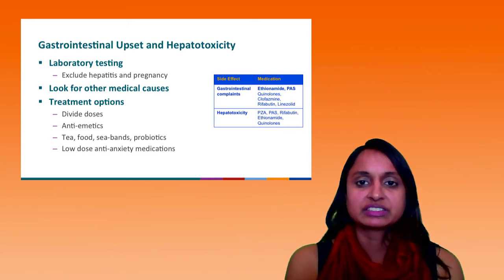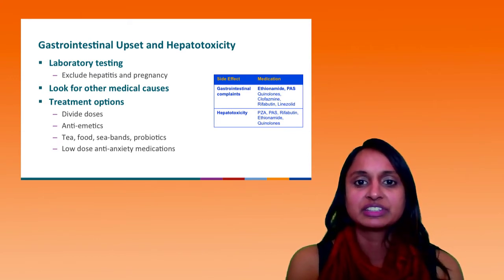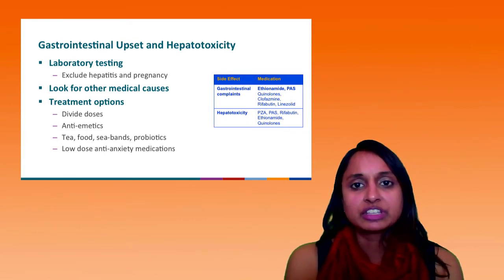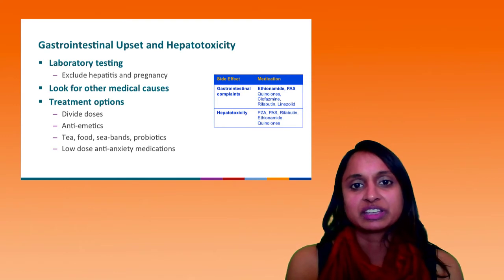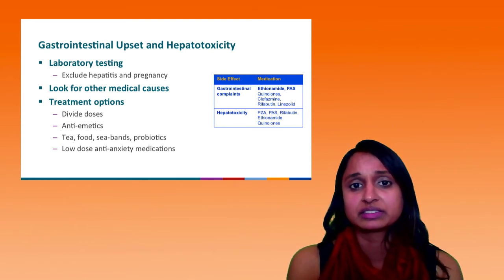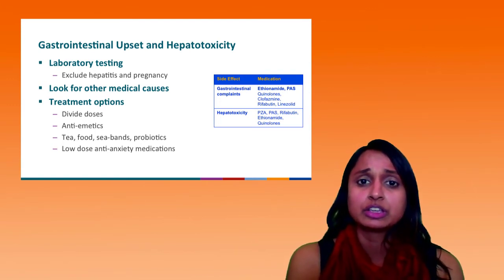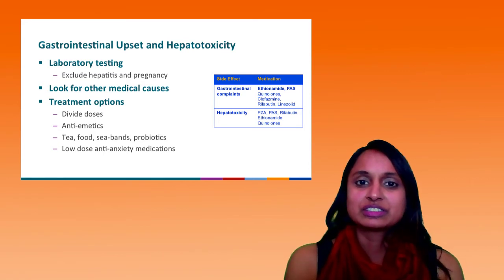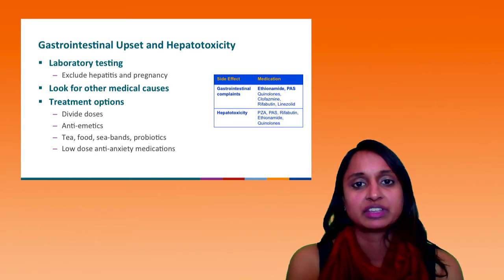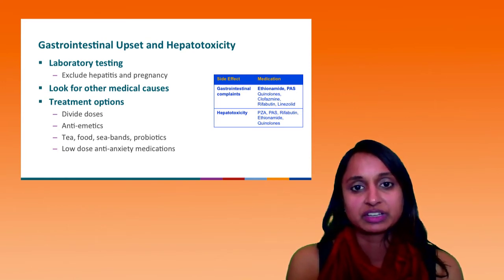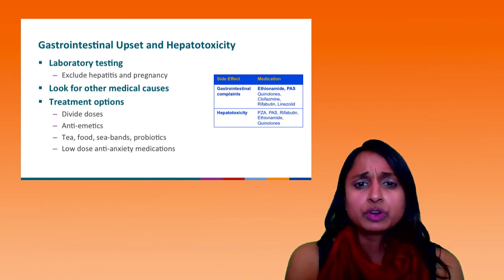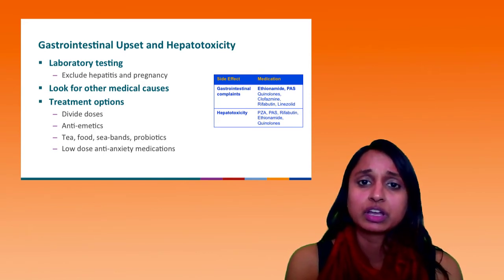Gastrointestinal upset or hepatotoxicity. In the corner, I have the table that shows the medications most likely associated with this side effect. The first thing you're going to want to do is get any laboratory testing. You want to rule out hepatitis. For individuals who are female and who have some nausea and vomiting, you might want to rule out whether they're pregnant. Look for some other causes — for example, hepatitis or alcohol use. There could be other reasons why your patients are having GI upset or hepatotoxicity. In terms of what you can do to manage these patients, there are several things you can try.